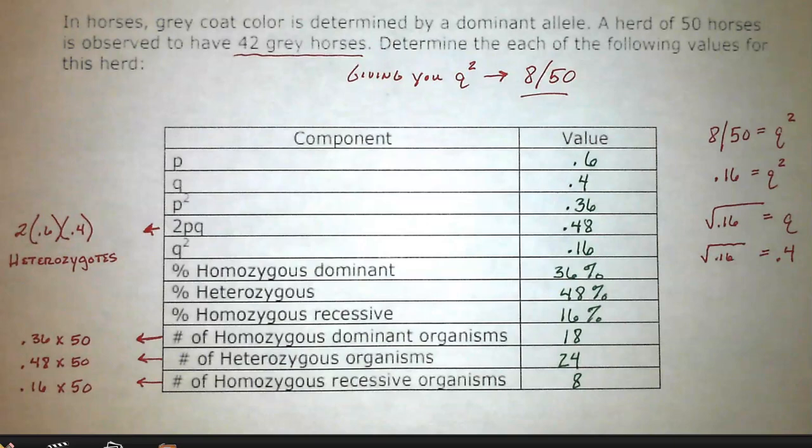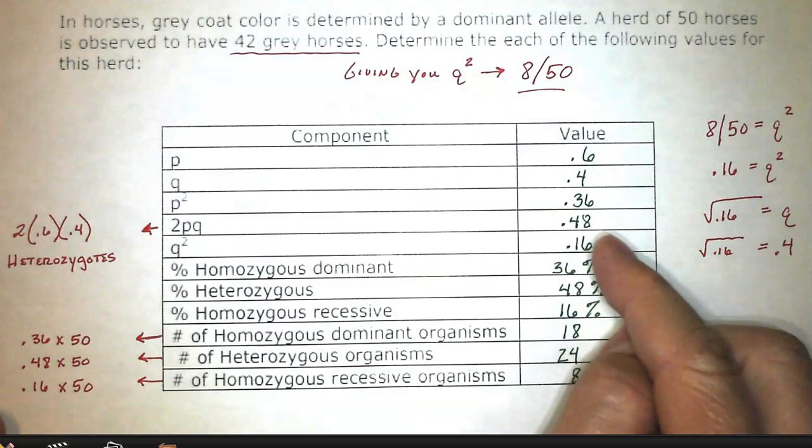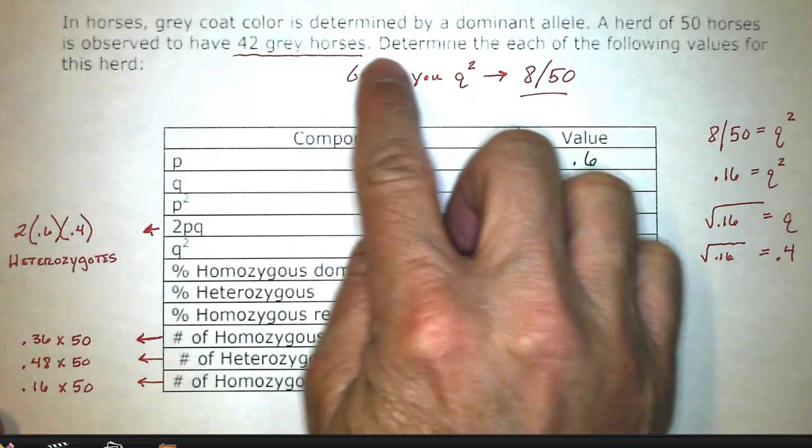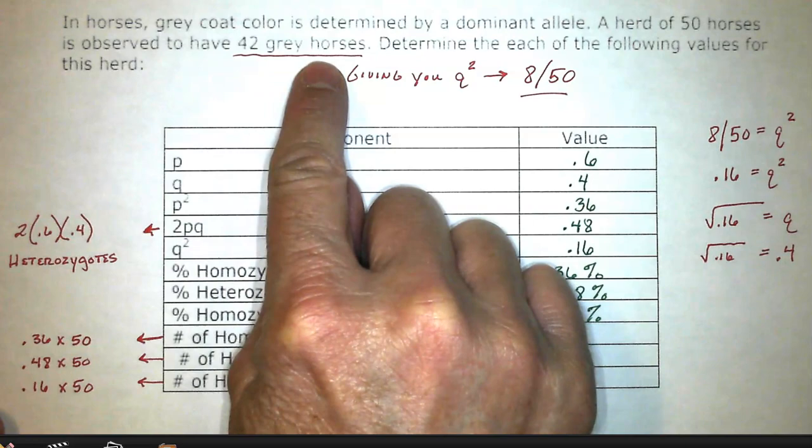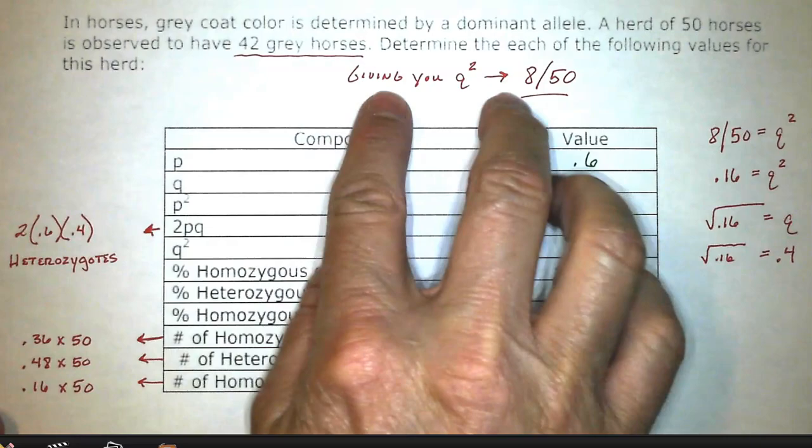Hey kids, this is the warm-up for Hardy Weinberg that we're doing on Wednesday and Thursday. I just wanted to show you the key here after you did it so you can know that you're right. So in horses, gray coat color is determined by a dominant allele. A herd of 50 horses is observed to have 42 gray horses. Determine each of the following values for this herd.